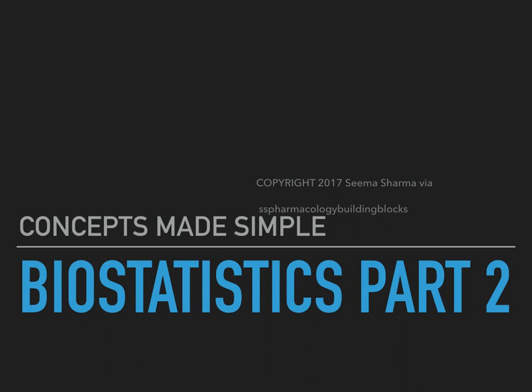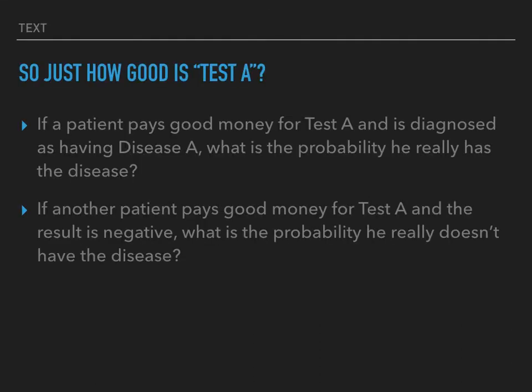Hello and welcome to my second lecture on biostatistics. Remember Test A from my first lecture? I have a couple of questions about it. Firstly, if a patient pays good money for Test A and is diagnosed as having disease A, what is the probability that he really has that disease?